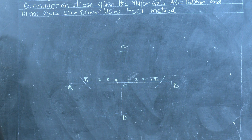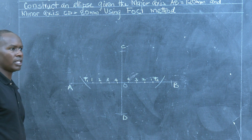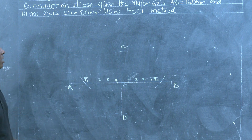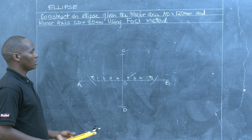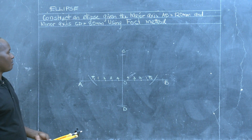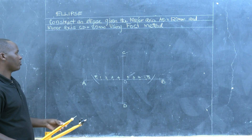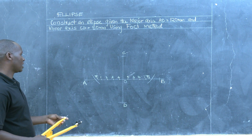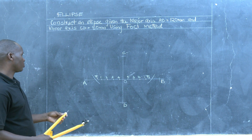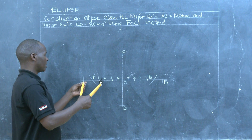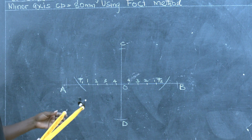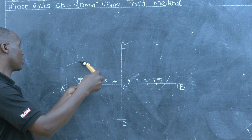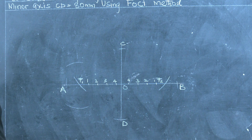Once we have established those points, they will help us define the path — the locus of a point defined by these diameters. Using the FOSSI method, with our compass we will open it to radius A1. Then, using F1 as the center, we will describe an arc above and below the major axis.